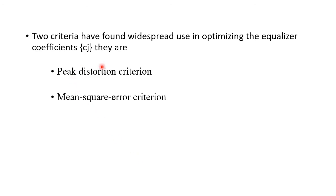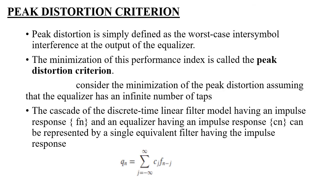Two criteria have found widespread use in the optimization of equalizer tap weight coefficients cj: peak distortion criteria and mean square error criteria. Peak distortion is defined as the worst-case inter-symbol interference at the output of the equalizer. The minimization of this performance index J is called the peak distortion criteria.